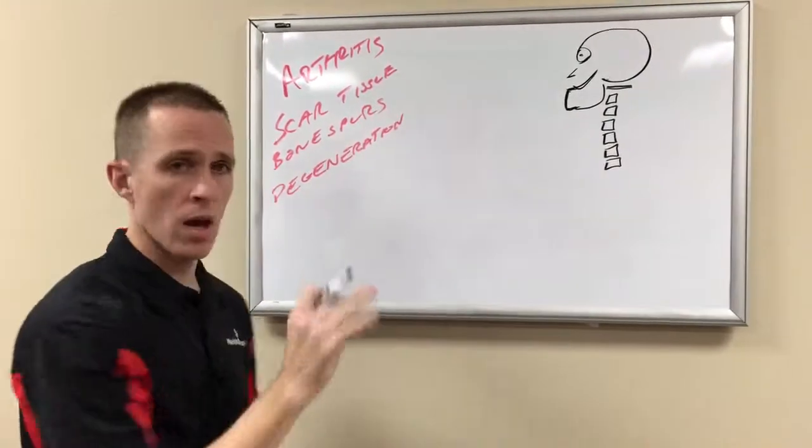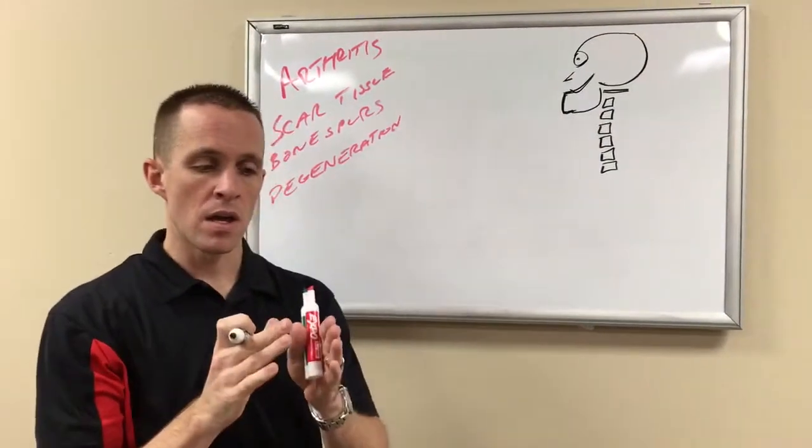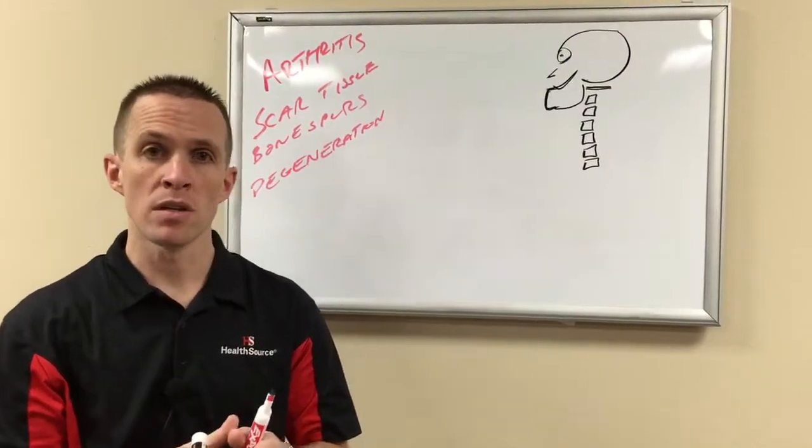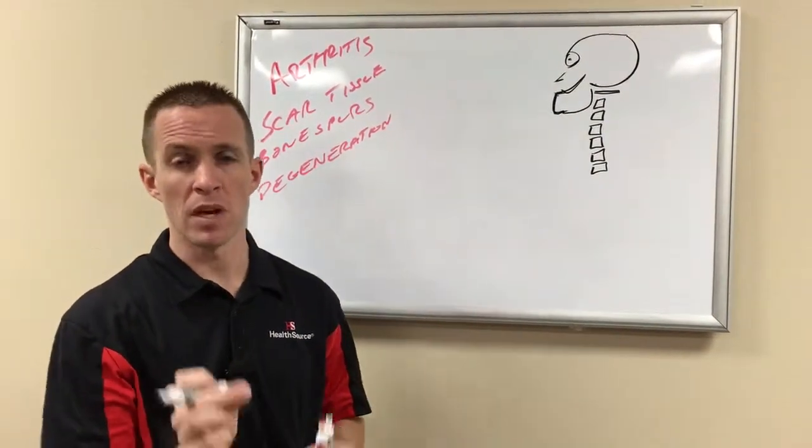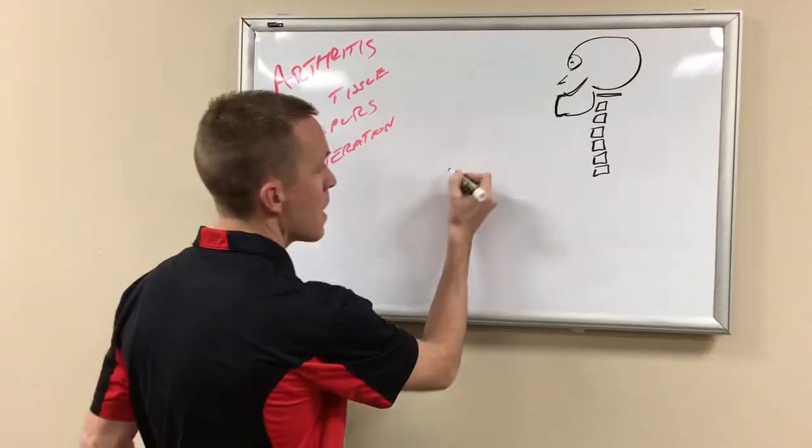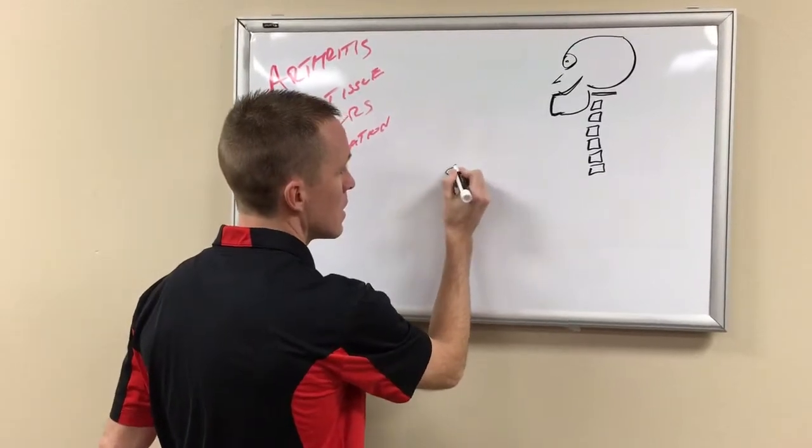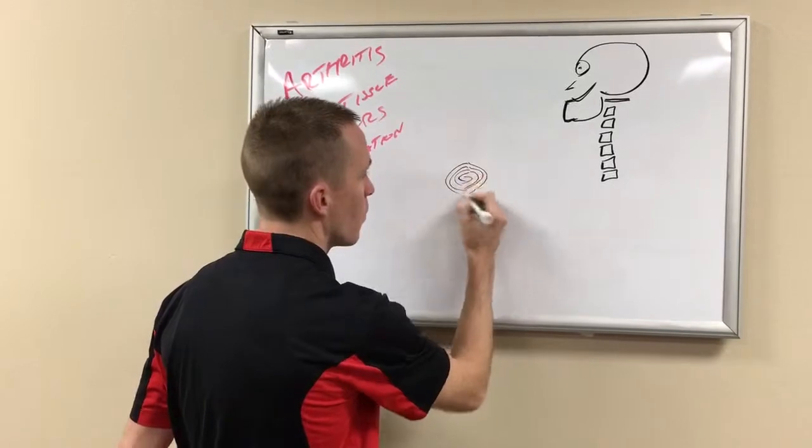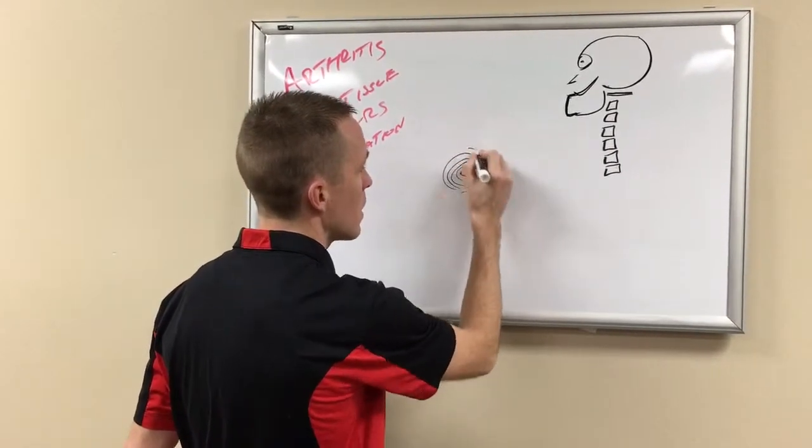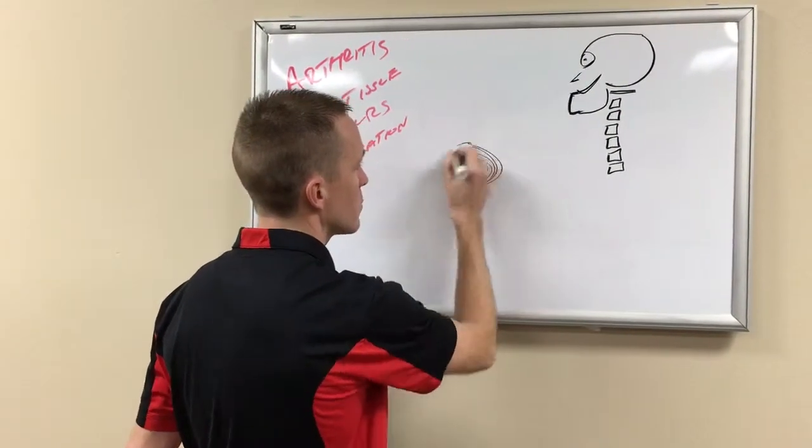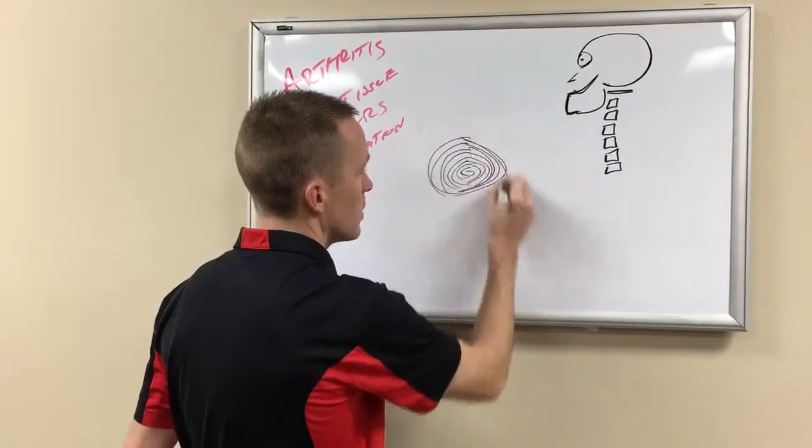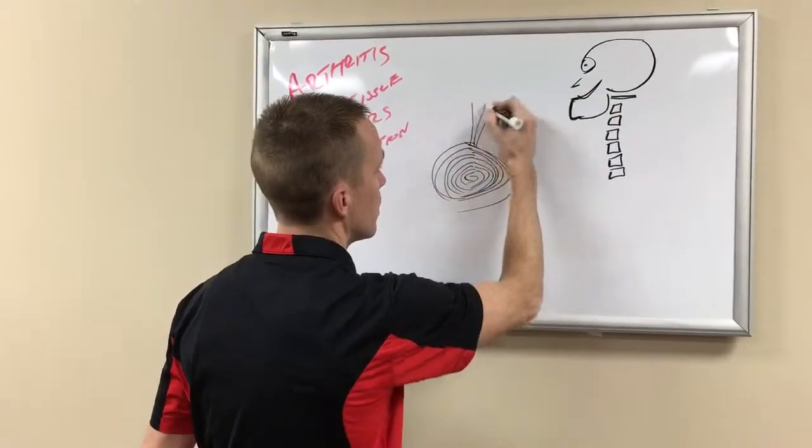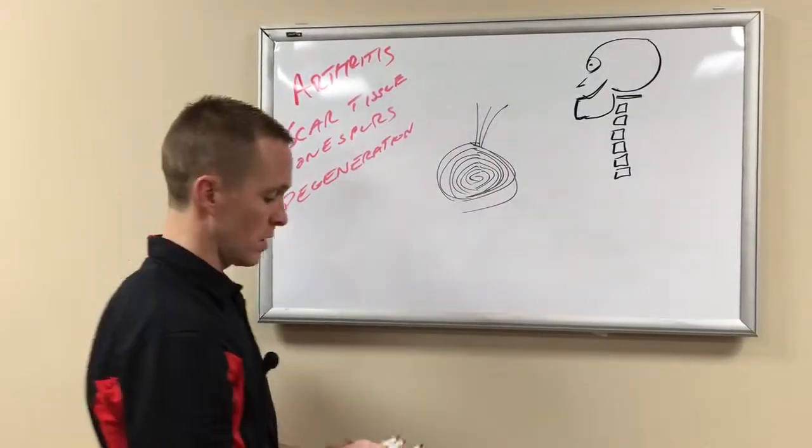First off, what happens when we have an area that is injured, that is immobile and not moving? A joint. So we have a joint that's not moving. Every seven days a layer of scar tissue builds and layers up, day after day, week after week, month after month, year after year. It builds up and builds up, forming what we call scar tissue.